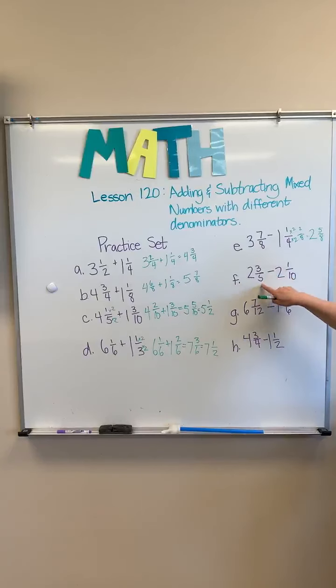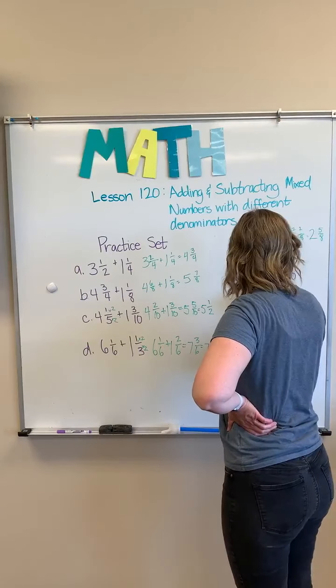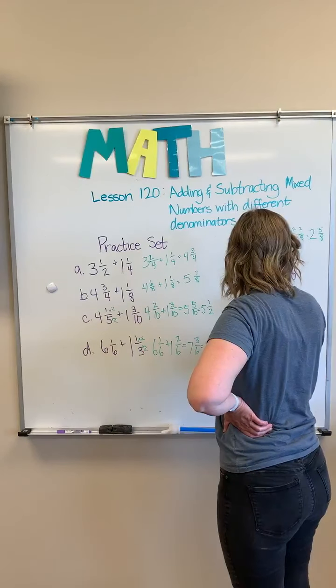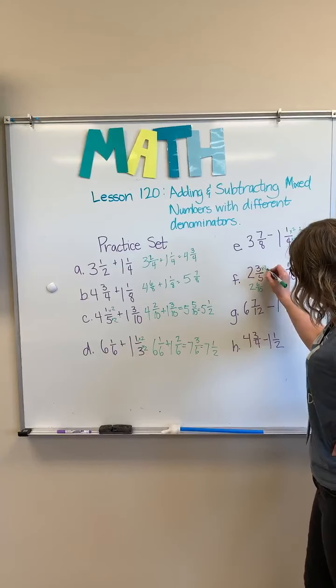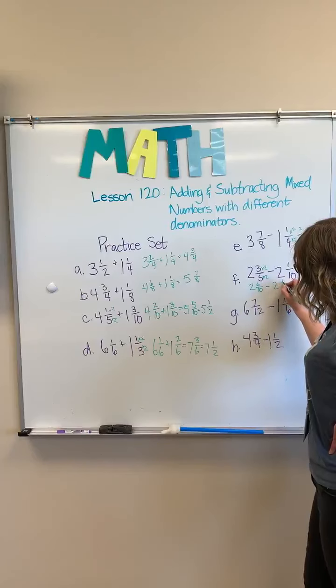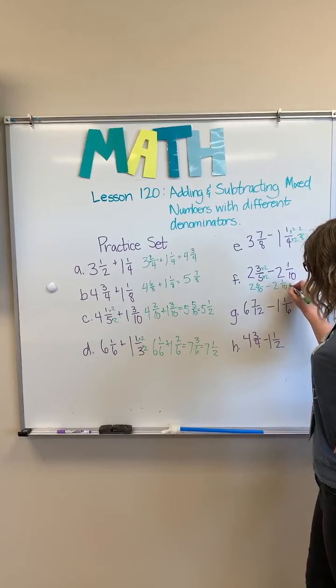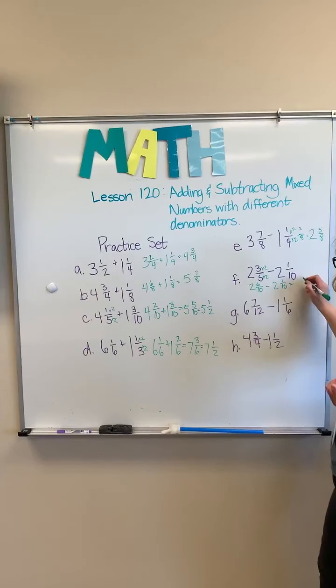Our next one, two and three fifths minus two and one tenth. And I know that I can say two and six tenths, because I multiplied this by two and this by two, minus two and one tenth. And that gives me two minus two, zero. Six minus one is five tenths.